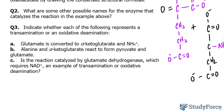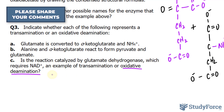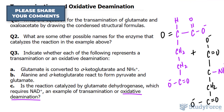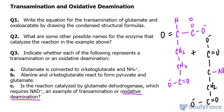Lastly, is the reaction catalyzed by glutamate dehydrogenase, which requires NAD+, an example of transamination or oxidative deamination? It will be oxidative deamination, not transamination. And there you have it — three separate examples based on transamination and oxidative deamination.